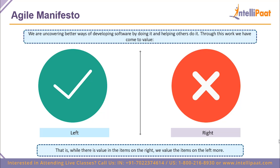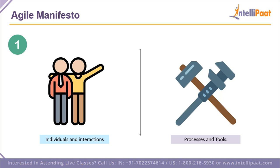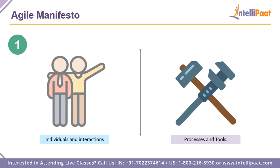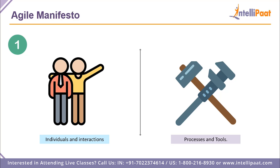Let me give you an example. We have 'individuals and interactions' versus 'processes and tools.' Individuals and interactions are on the left side, and processes and tools are on the right. Even though we do value processes and tools, we value individuals and the interactions these individuals have with each other even more. This is the value that Agile promotes — it's part of the Agile manifesto.